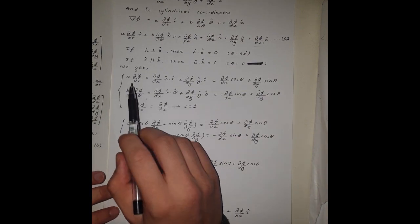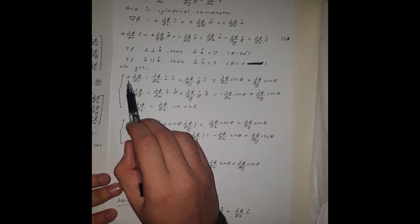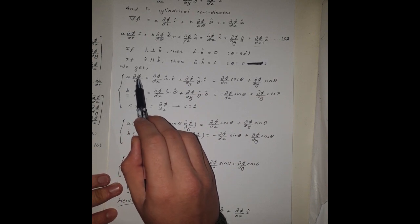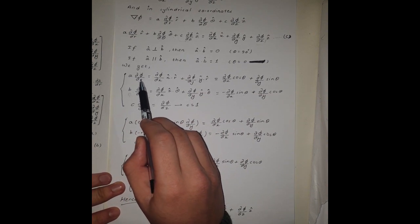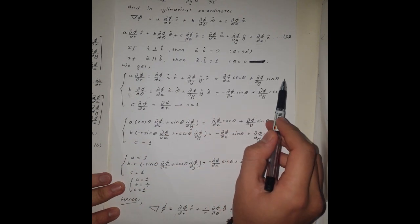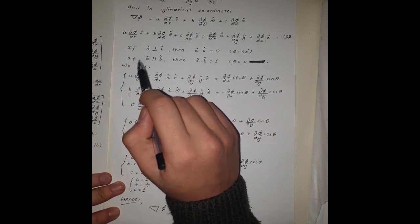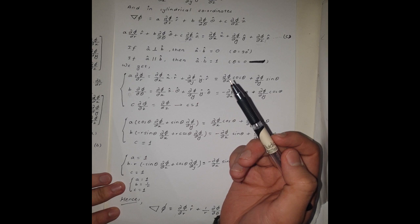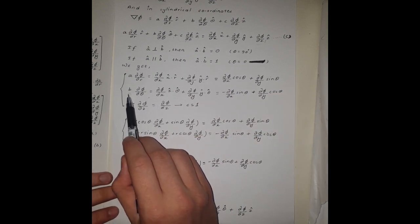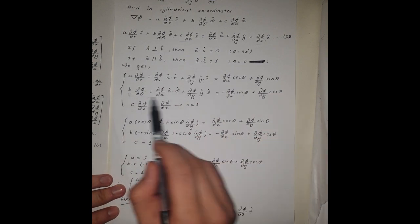So we can say that a times the partial derivative of phi with respect to r is equal to the expression involving cos theta and sin theta. By doing similar operations we also obtain an expression for b times the partial derivative of phi with respect to theta.